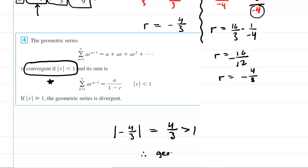Therefore, this geometric series is divergent. Or you could say it diverges. And that's it. That's all you have to do to determine whether or not that series converges.